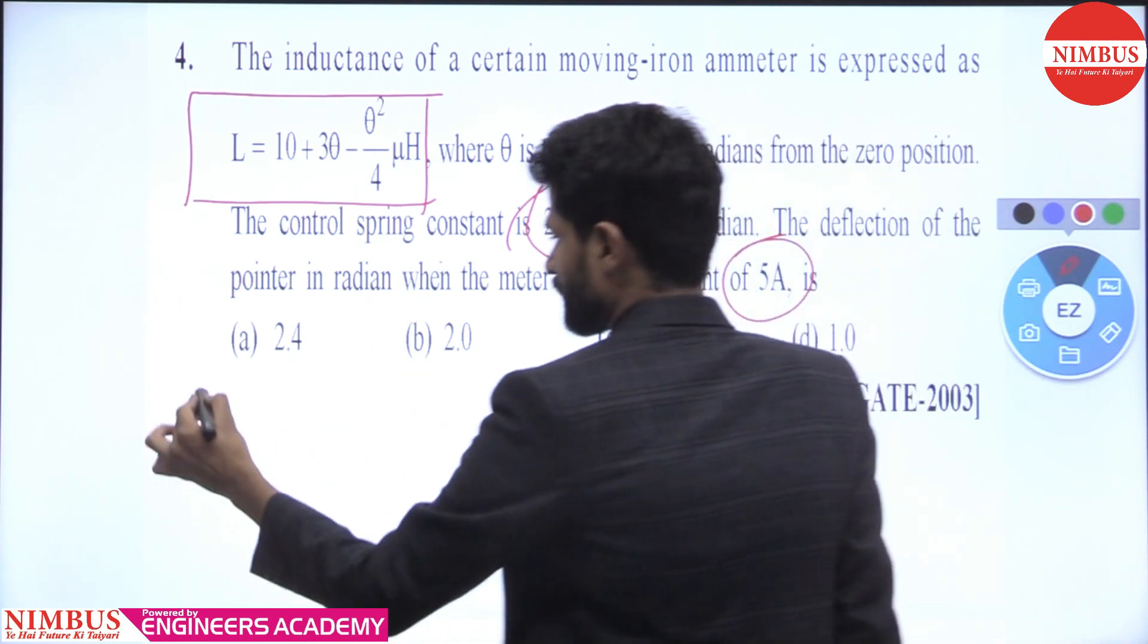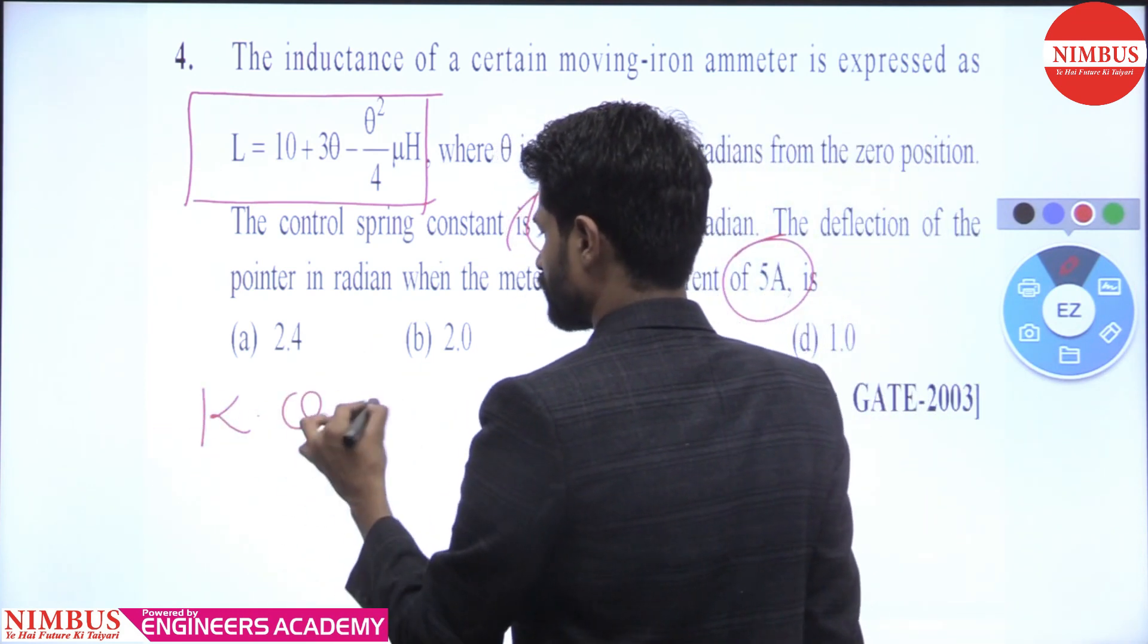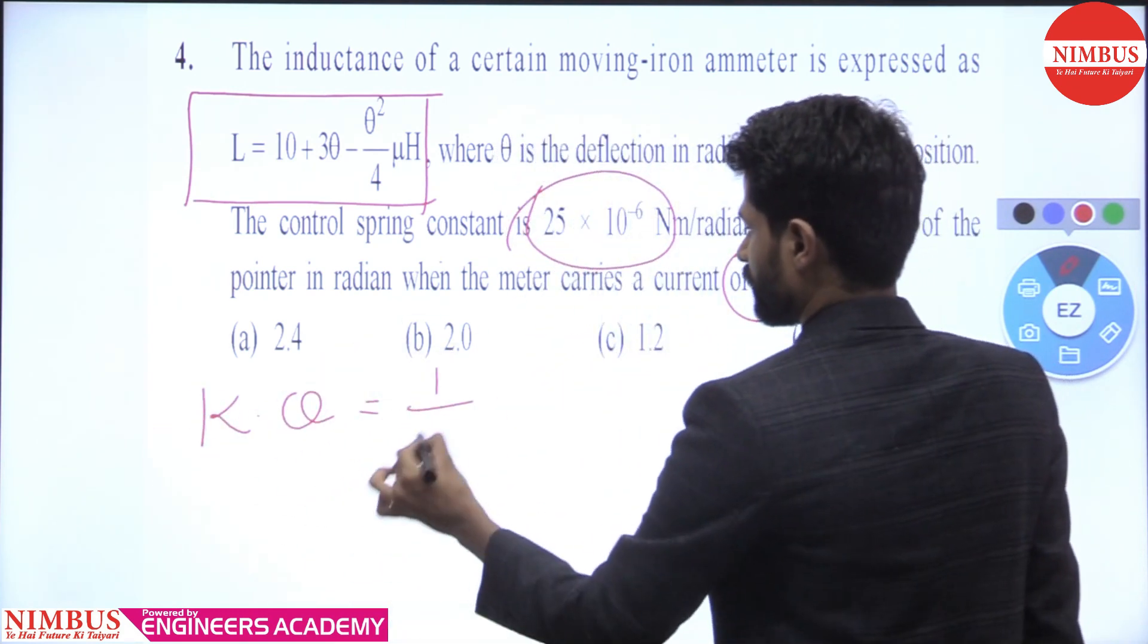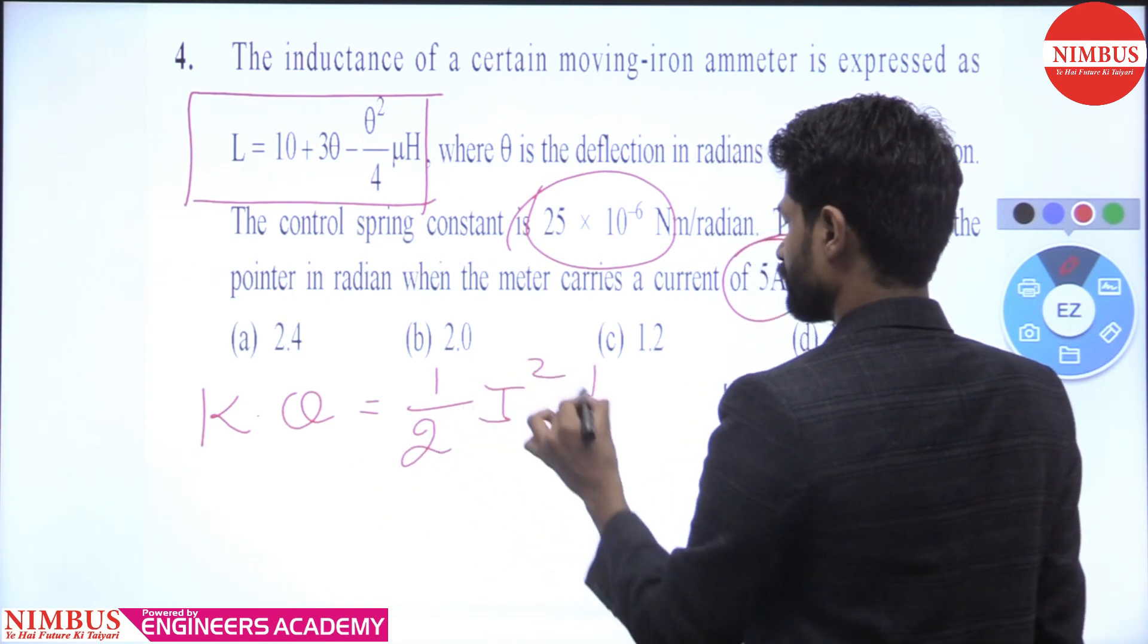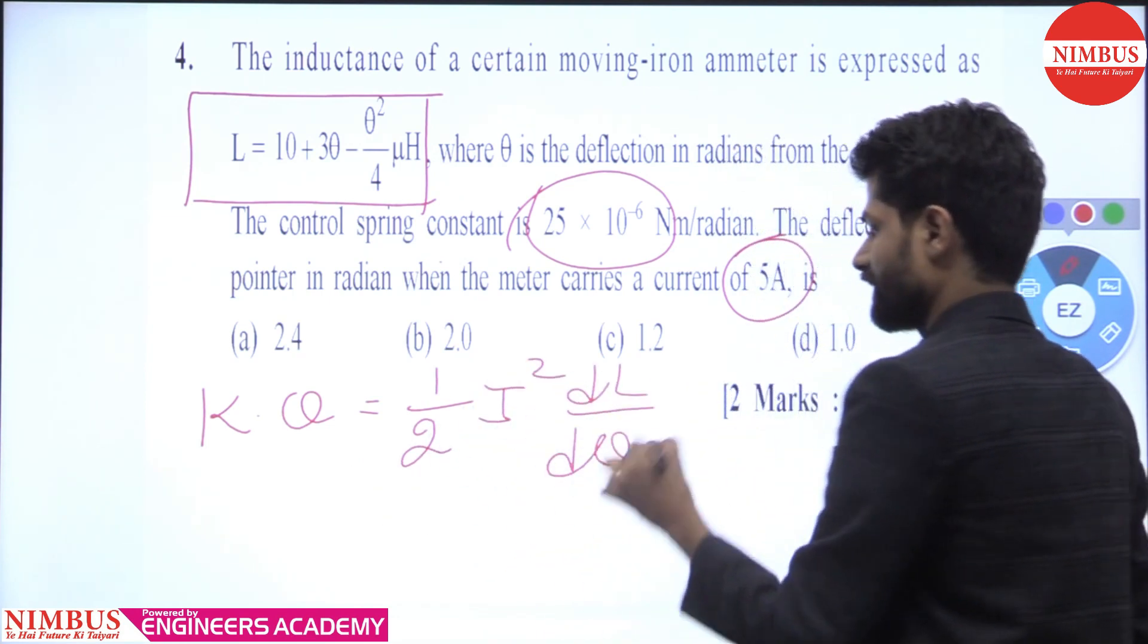Simple question. The controlling torque K theta equals 1 by 2 I squared dL by d theta.